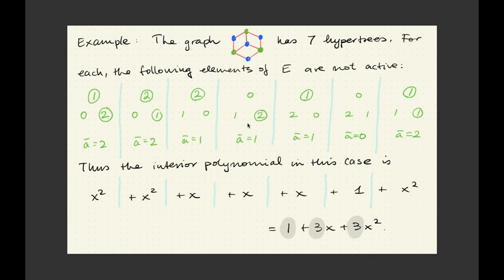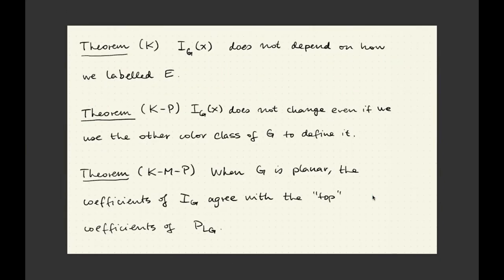By symmetry you can construct these five others — they are just permutations. It turns out there is a seventh one as well. You can follow my definition and figure out which of the three green vertices has the active or not-active status. Then you see that each of these makes its contribution as written on the bottom line. And then you get one, three, and three — just like before — because that's exactly the pattern I was talking about.